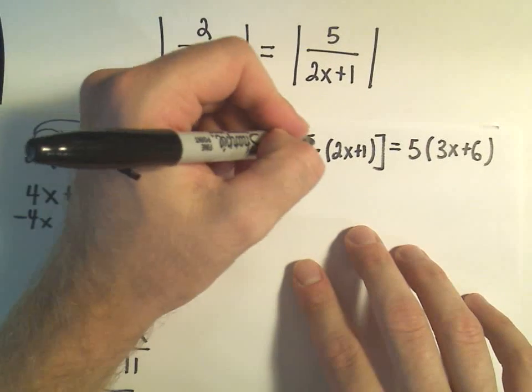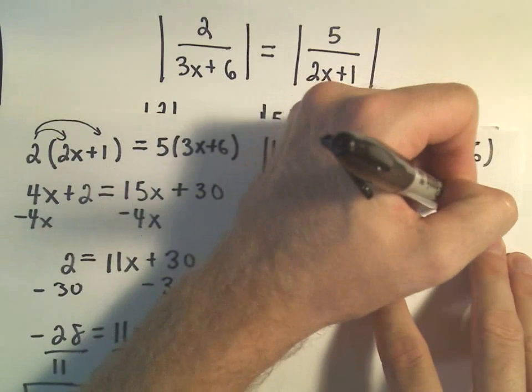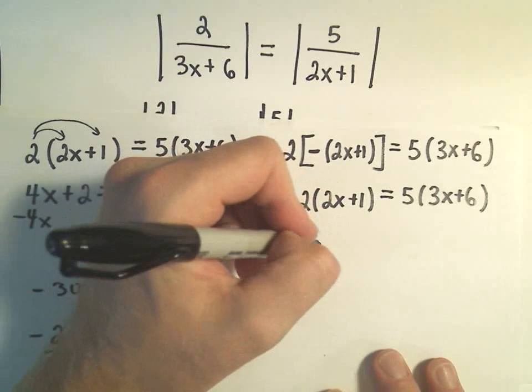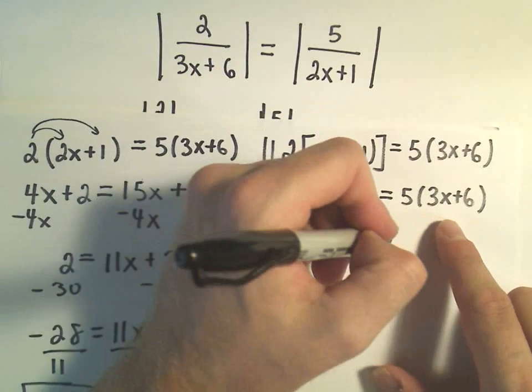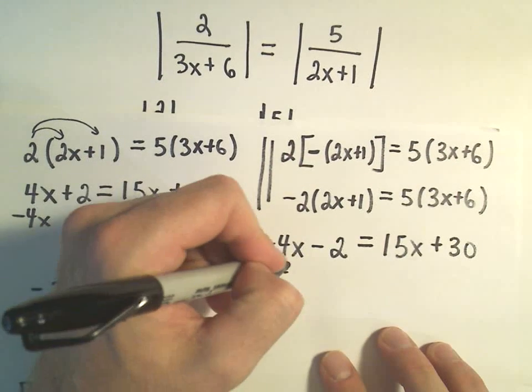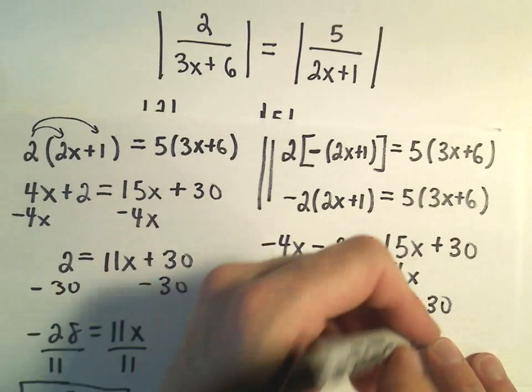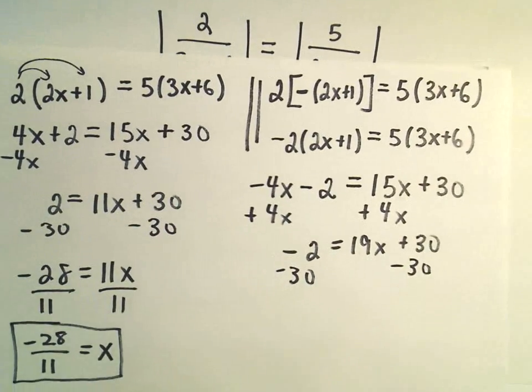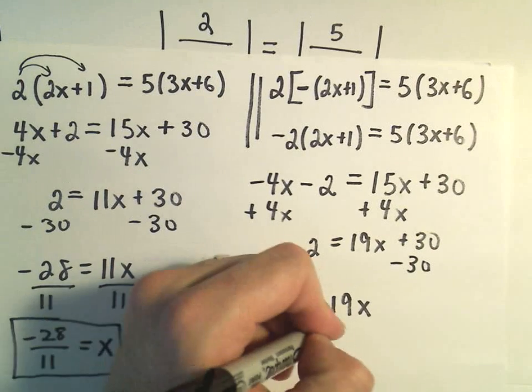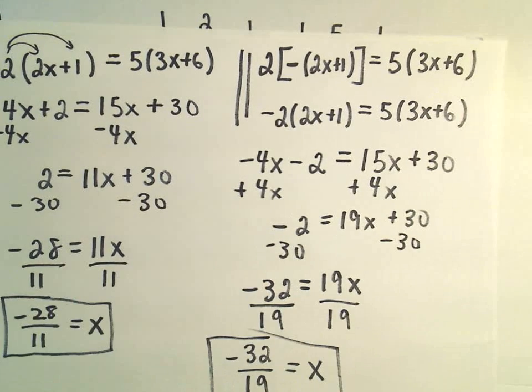And for the other one, I could pull the negative all the way out front. So really we have negative 2 times 2x plus 1 and 5 times the quantity 3x plus 6. So if I distribute the negative 2, we'll get negative 4x. Negative 2 times positive 1 is negative 2. 5 times 3x is going to be 15x. 5 times positive 6 is going to be positive 30. And then I'm going to add 4x to both sides. So we have negative 2 equals 19x plus 30. I can subtract 30 from both sides. That'll give me negative 32 equals 19x. And then the last thing I'll do is simply divide both sides by 19. And I'll get my other solution of negative 32 over 19. So again, not the nicest numbers in the world, but solutions nonetheless.